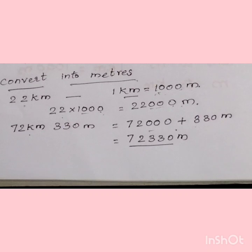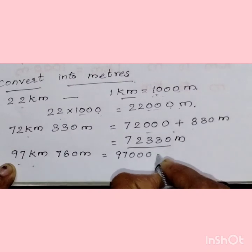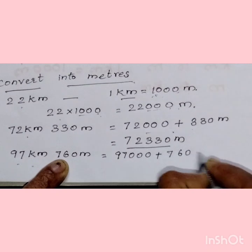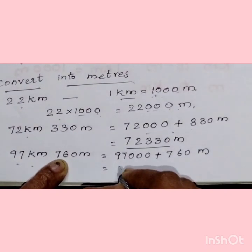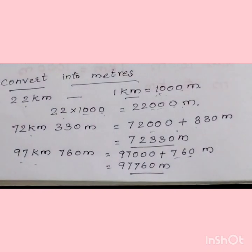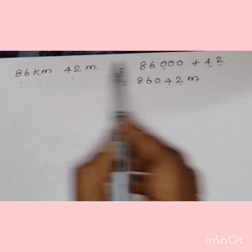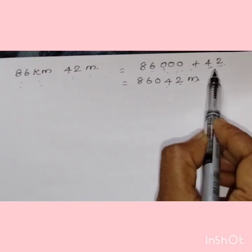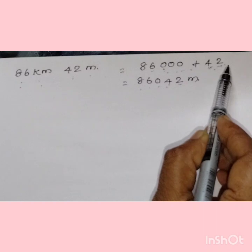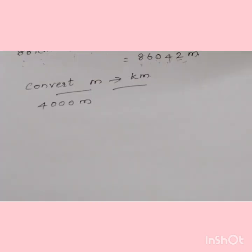Our next question is 97 kilometers 760 meters. Directly writing the answer: 97,000 plus 760 gives 97,760 meters. You can see the pattern — just write all the given digits together. The last worked example gives 86,042 meters; since the meters part has only two digits, a zero is added to make it three digits before combining.